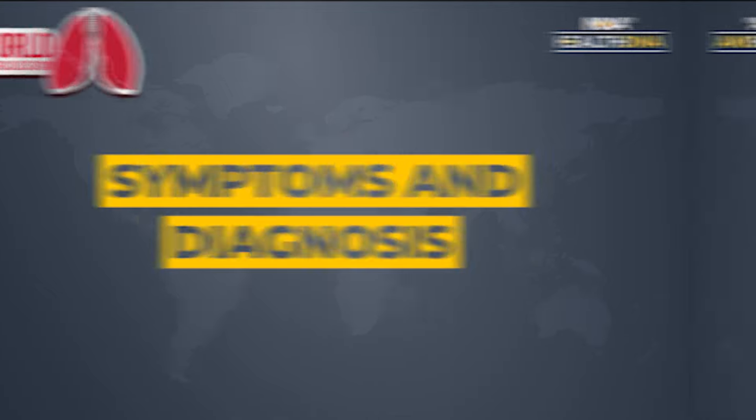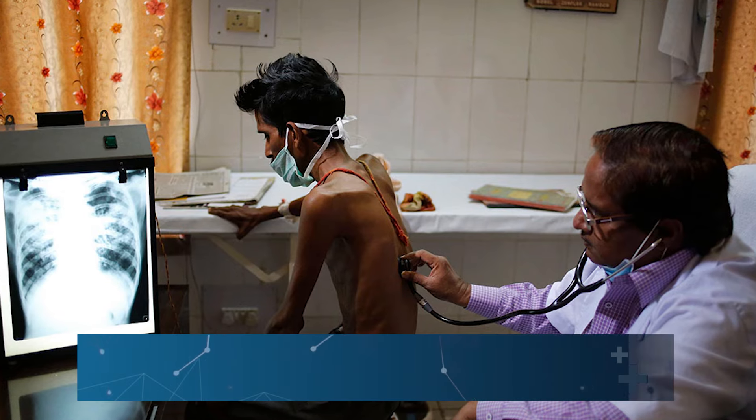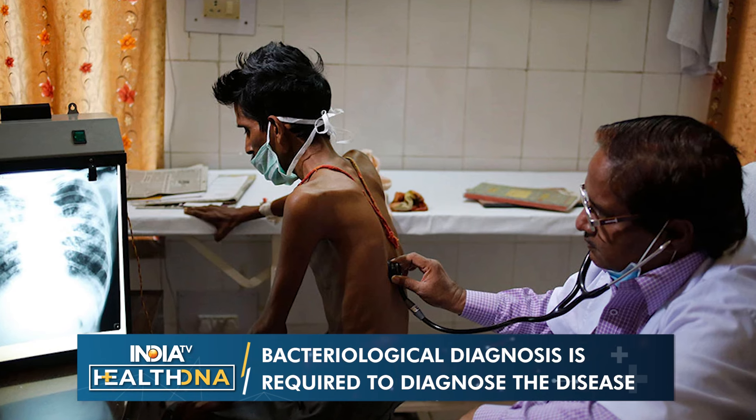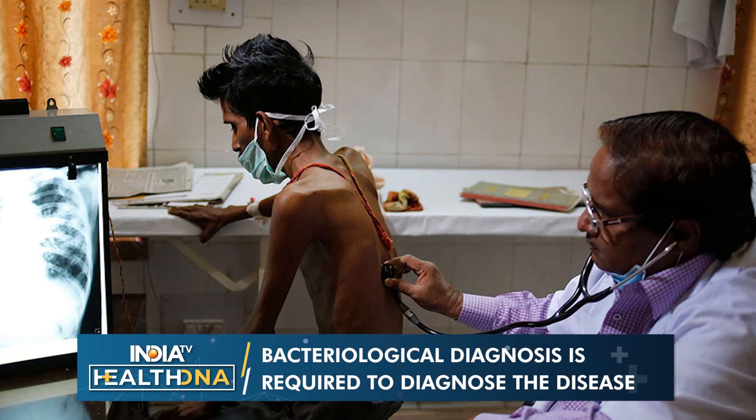The basic symptoms, as we all know: a cough for 14 days, a fever that is not going away for two weeks or more, along with additional symptoms of weight loss, loss of appetite, and feeling of lethargy. These are the main symptoms which can hint towards tuberculosis.